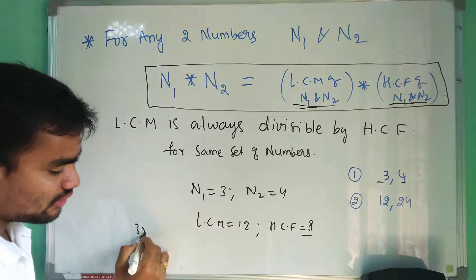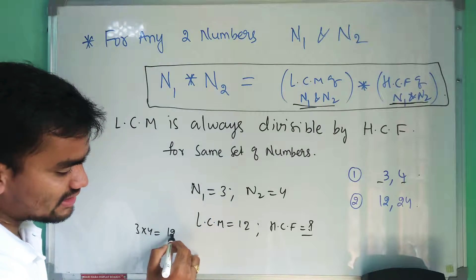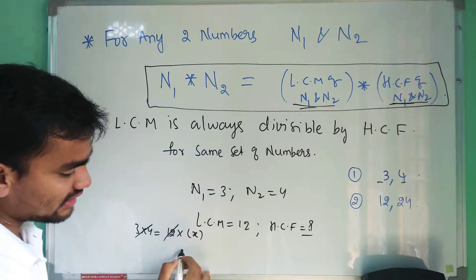So from this you can write 3 times 4 equals the product of the LCM of the two numbers. Let the HCF be x. Then from this you can say that the HCF of the two numbers is equal to 1.